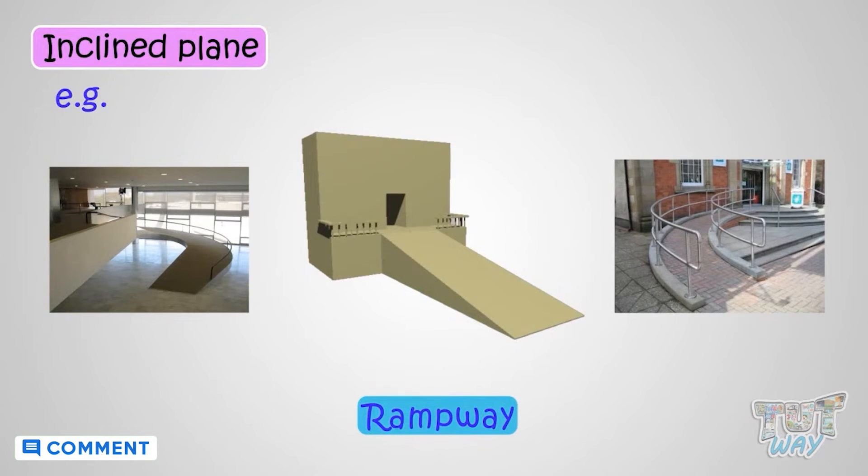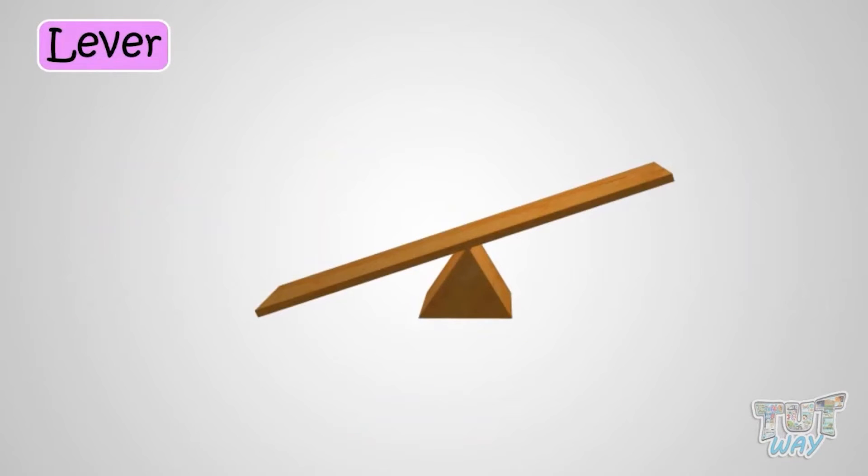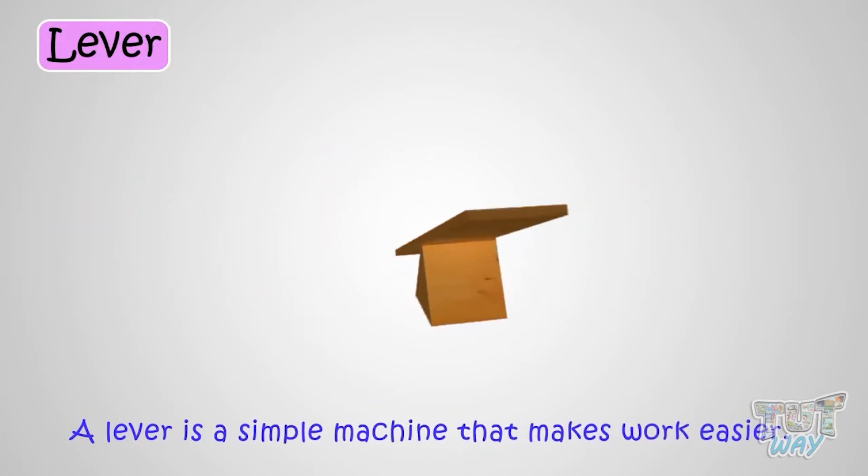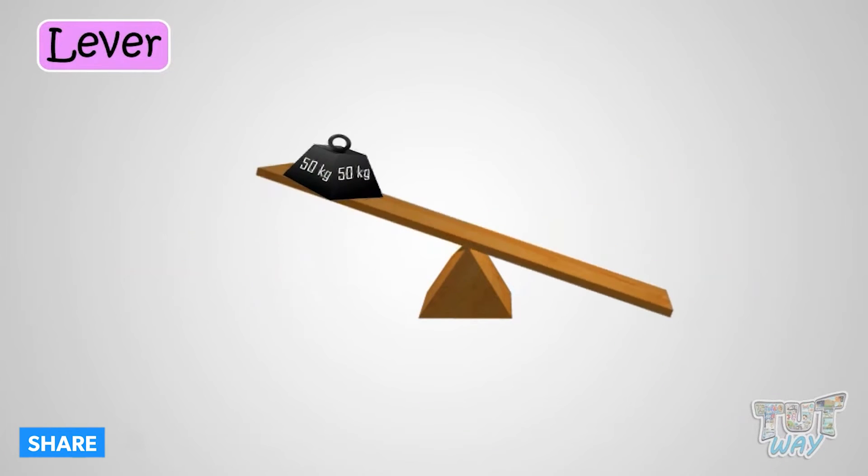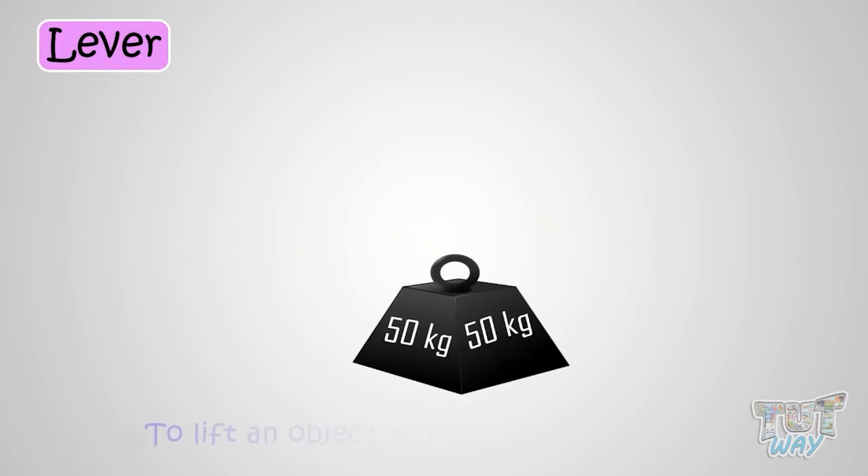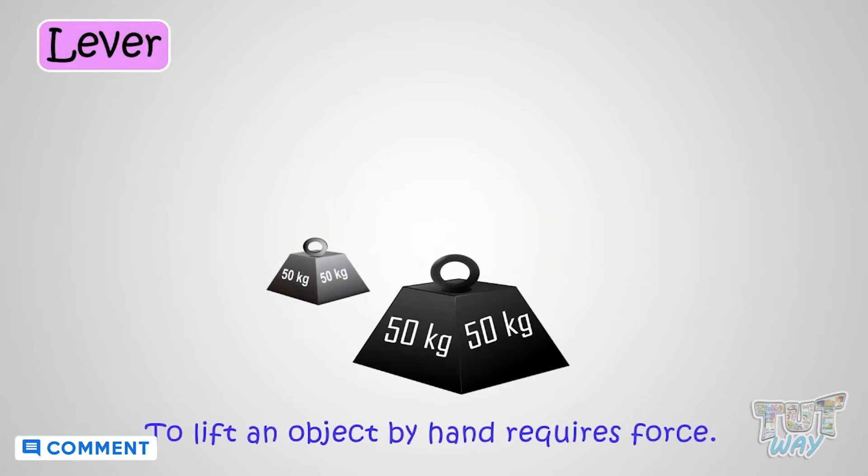Now let's learn another simple machine. It is a lever. A lever is another simple machine that makes work easier. A lever is basically a long stick that you push or pull against a fulcrum to move something. In order to lift an object by hand requires force.